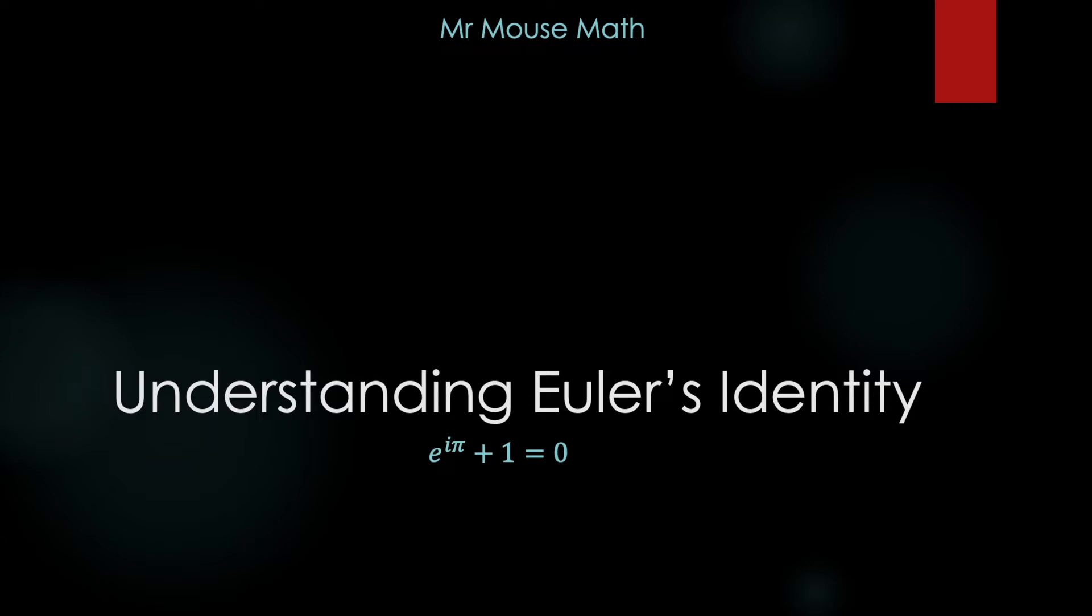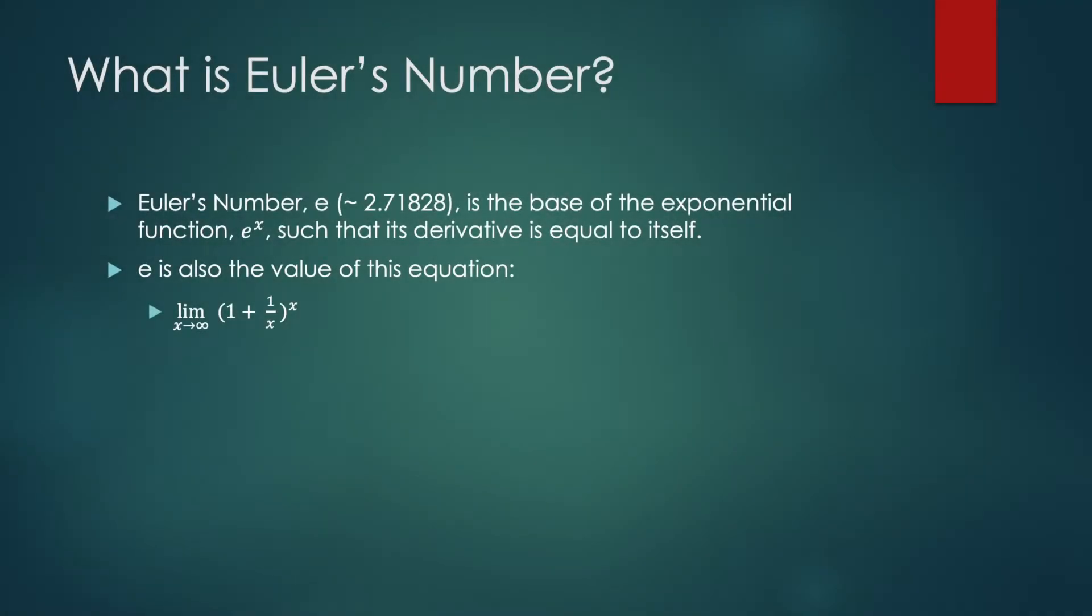What is Euler's number? Exponential functions are very interesting because their derivatives are always proportional to themselves. If you have an exponential function a to the X, the derivative is some constant of proportionality multiplied by a to the X.